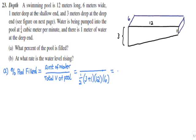Evaluating the denominator: one half times 4 times 12 times 6 gives us 144 cubic meters. I won't worry about the label since they'll cancel anyway.